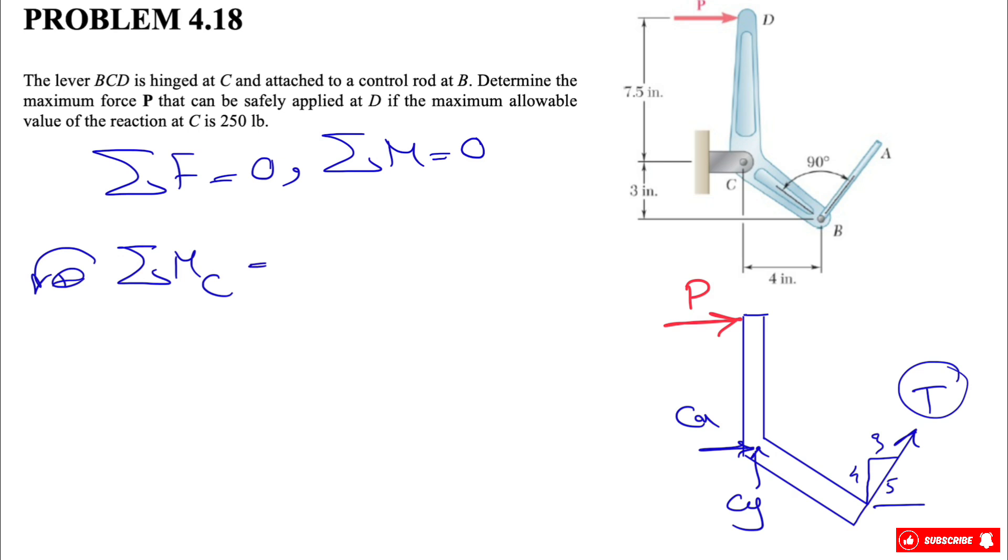We have the tension times the distance from B to C, which we know is 5. Again, all the details for these things are in the previous video. So we'll have T times 5, using the shortcut for finding the moment. We have the force P, and the distance to point C is 7.5. We have a negative sign since the moment is clockwise, and this will equal zero. We can find T based on P, which will be 1.5P.